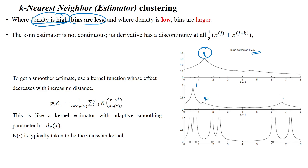When your density is low, the number of bins is larger. Here: bin one, bin two, bin three, bin four, bin five, bin six. When k equals 1 — number of neighbors equal to 1 — the density is very low.